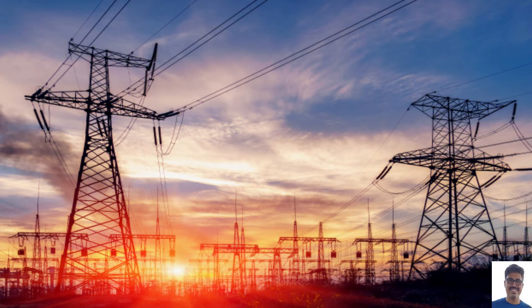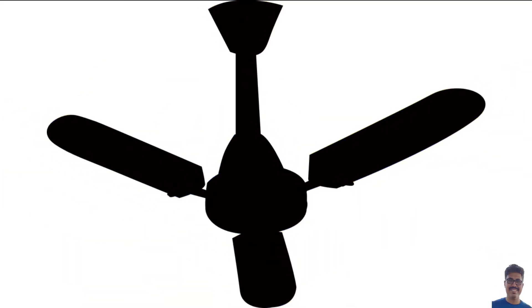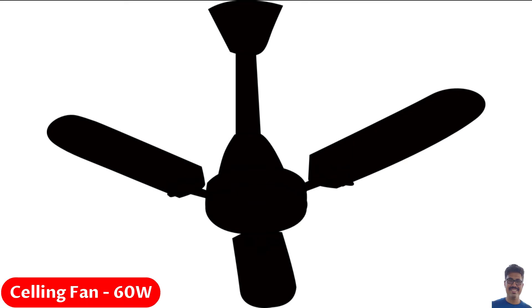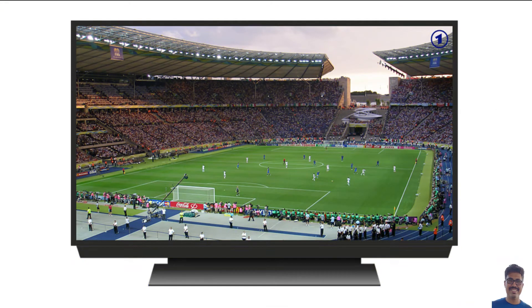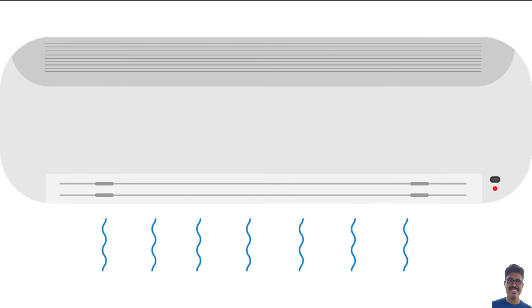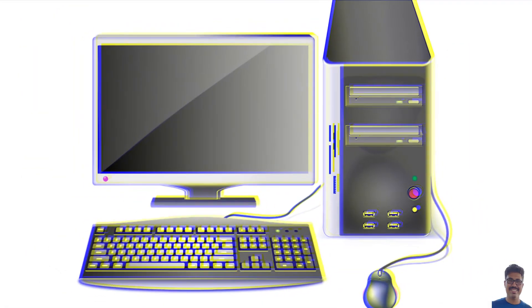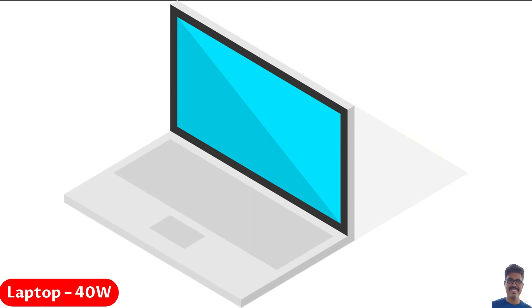Let me give you an example. I have taken almost every load you can have in your household. One lamp is 40 watts — normally tube lights are 40 watts. Ceiling fans are 60 watts. A 43-inch LED TV consumes 60 watts. A 180-liter refrigerator is near 200 watts, so I've taken 220 watts. An air conditioner is 1700 watts — a 1.5-ton 3-star AC takes that amount. A desktop computer consumes 100 watts, and a laptop consumes 40 watts. These are all approximations.